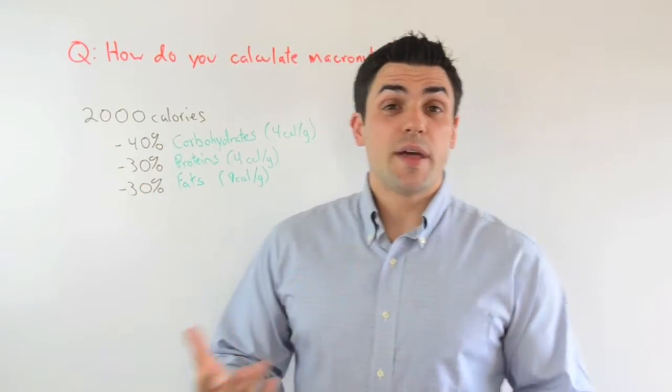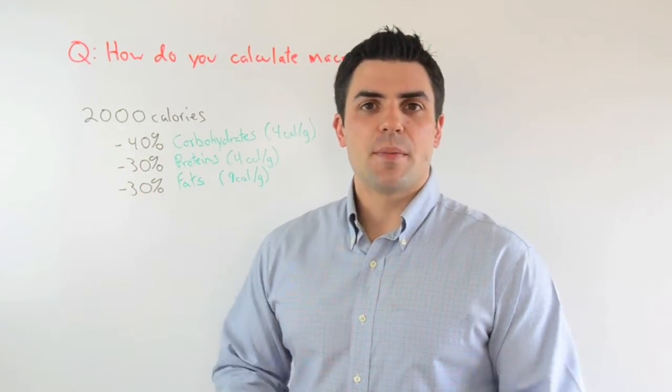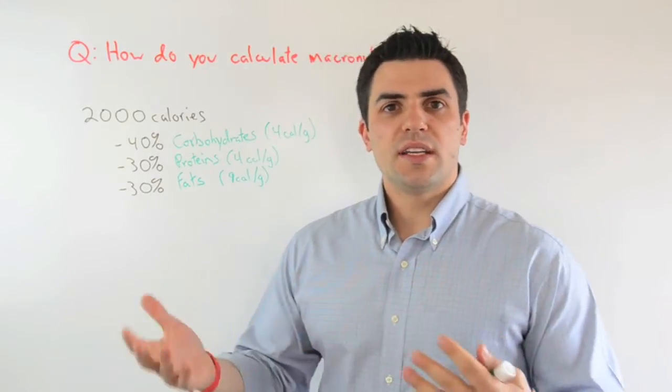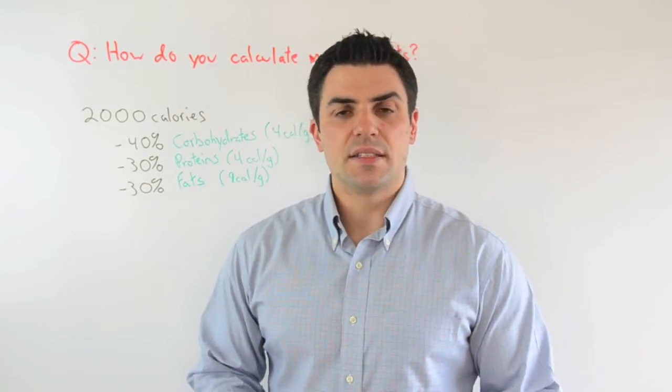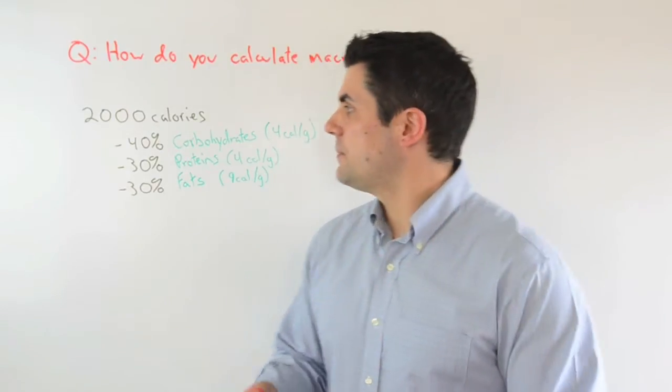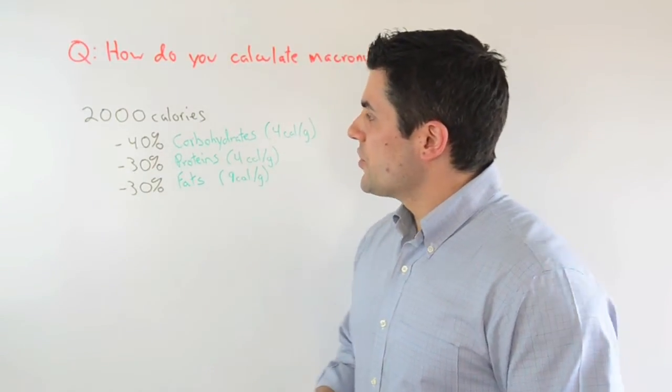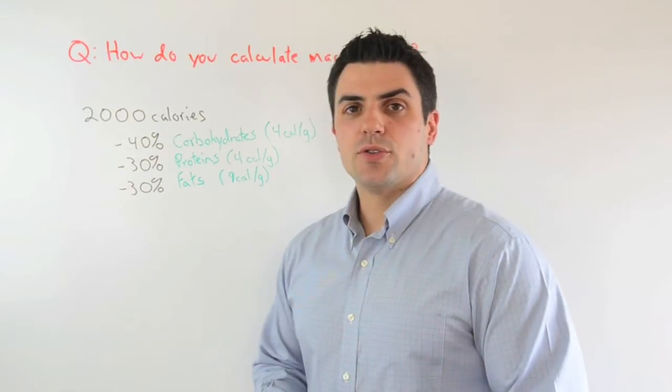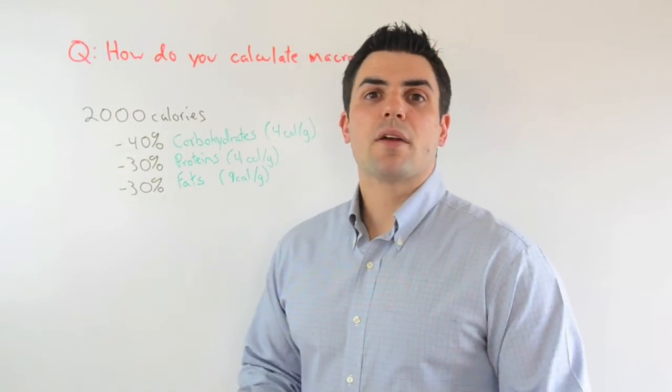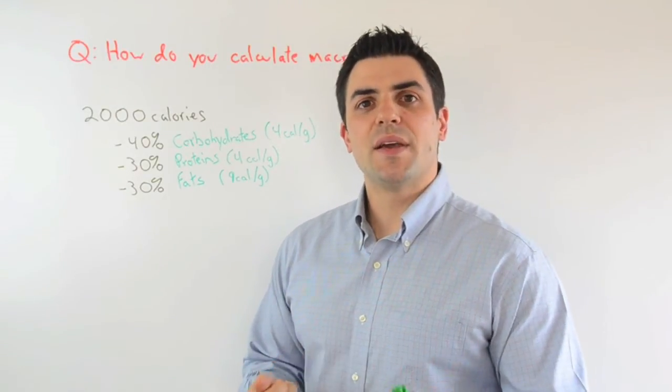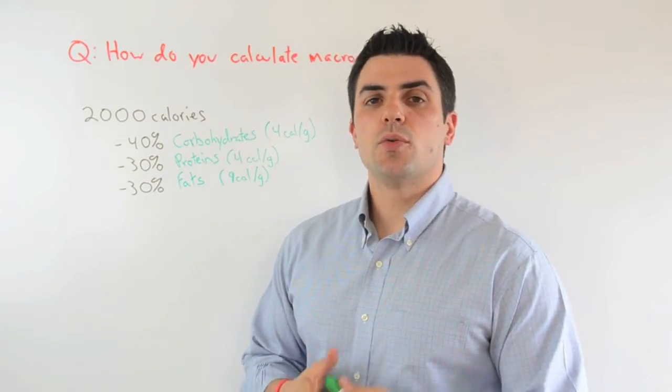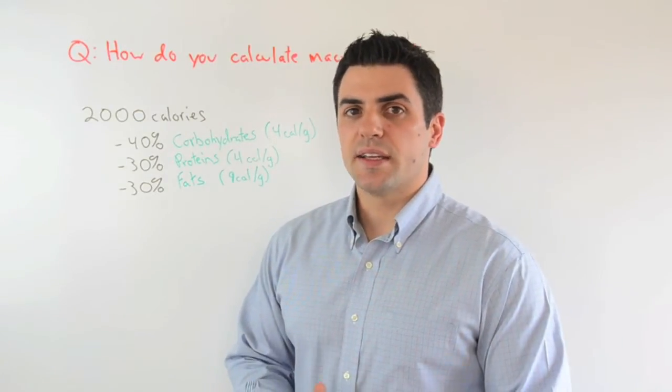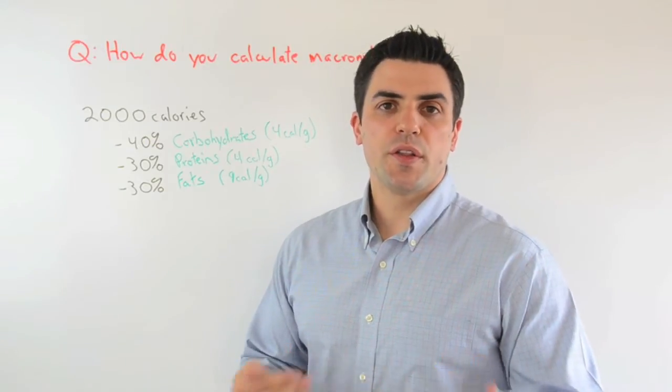I'm going to use an example of a 2,000 calorie diet just because it makes the math a little bit easier, but you can insert whatever you want here for your calorie needs, and then we'll go through how to calculate it. So the first step with calculating your macronutrients is determining what's your macronutrient breakdown, and this is based on percents of total calories. Usually how I start with clients is I start with a 40-30-30 breakdown.